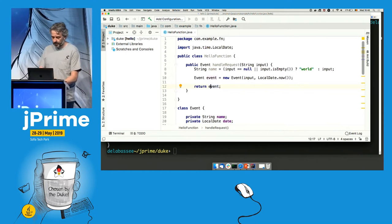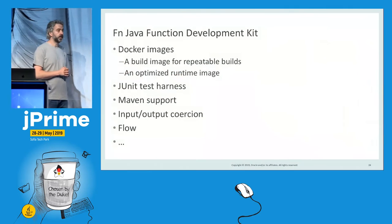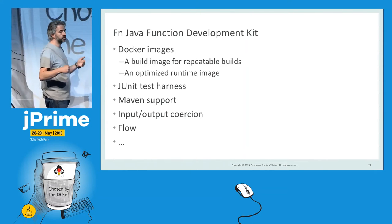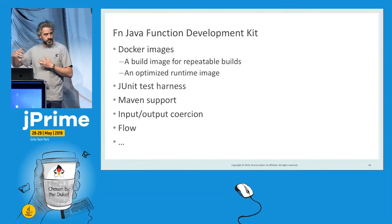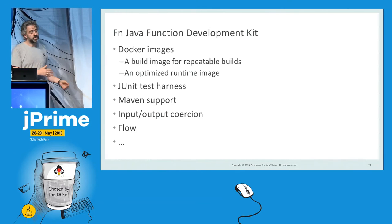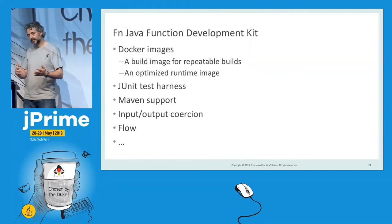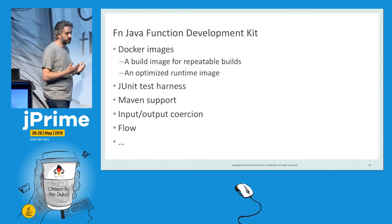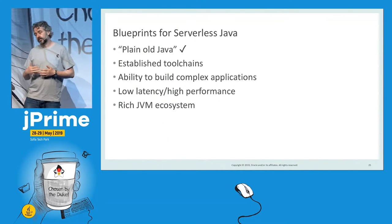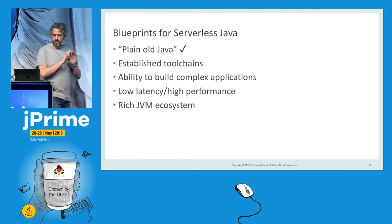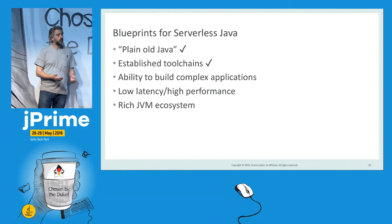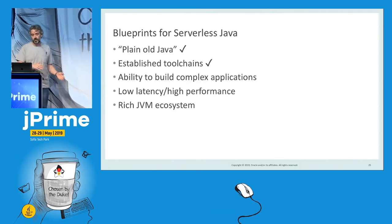This is possible because FN provides a Java FDK — a Function Development Kit — which provides support for JUnit, support for Maven, and input/output coercion: the ability to pass JSON payload that is automatically converted to a Java type in both directions. The Java FDK also provides optimized images for building and running the function. The idea is that with the Java FDK you can write a serverless Java function using plain old Java, keeping your existing toolchain like Maven, IntelliJ, Eclipse, or NetBeans.